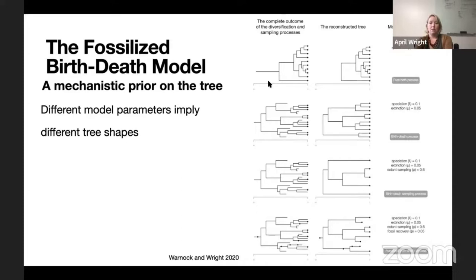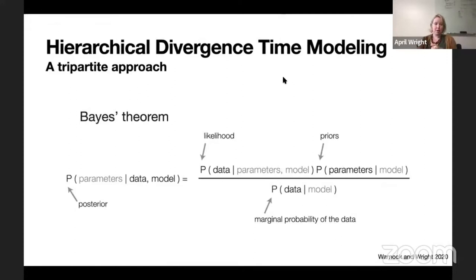A lot of us are fairly familiar with Bayes' theorem. We have the posterior probability on the left-hand side of the equation — the probability of parameters given data and a model. On the right-hand side we have the likelihood, the probability of the data given your parameters and a model, plus any prior probability distributions that specify knowledge you have about those parameters. And that's all divided by the marginal probability of the data, which is a complicated quantity. I'm not going to spend too much time on it here, but I'm happy to answer questions.